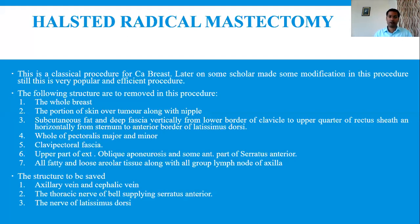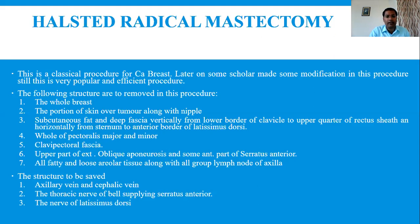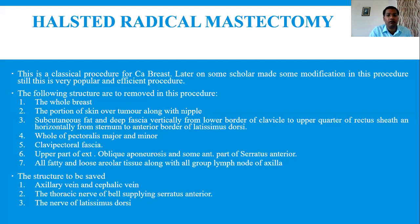The complete subcutaneous fat and deep fascia of this area must be removed, along with the whole pectoralis major and minor muscles, the clavipectoral fascia up to the clavicle, the upper part of the external oblique aponeurosis, and some anterior part of the serratus anterior. All fatty and loose areolar tissue along with all groups of axillary lymph nodes — including supraclavicular, apical, and sub-axillary groups — must be removed during surgery.